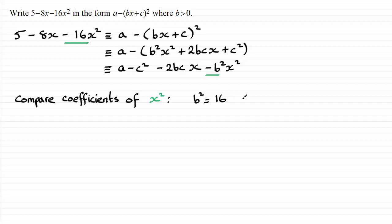And so from here we could take the square root of the 16 to get b, and we therefore have b equals plus or minus four. But we know that b is a positive value, so it's got to be four, since b is greater than zero.